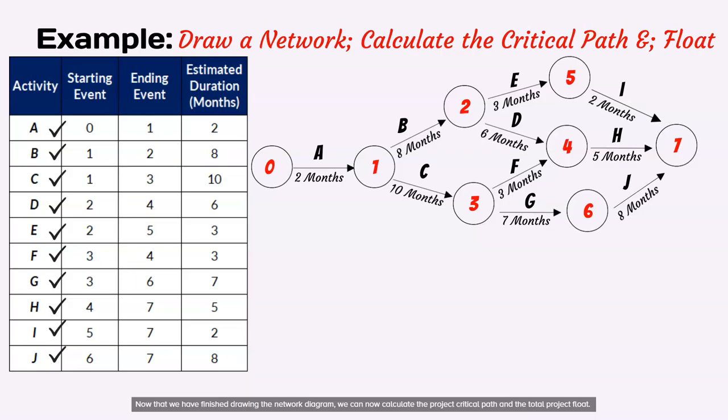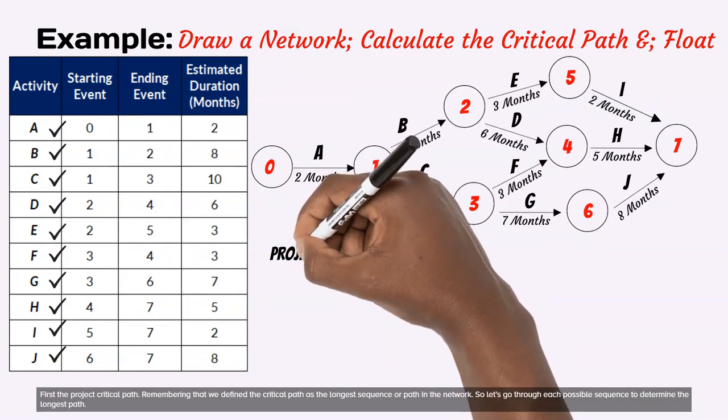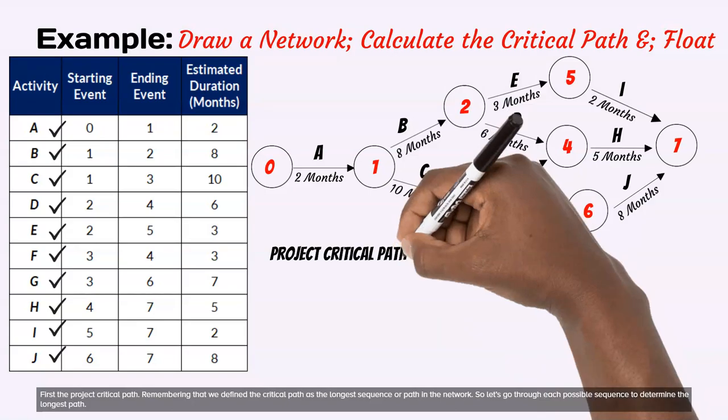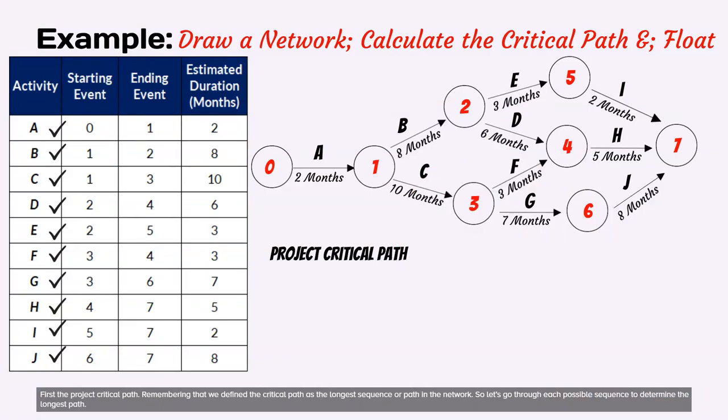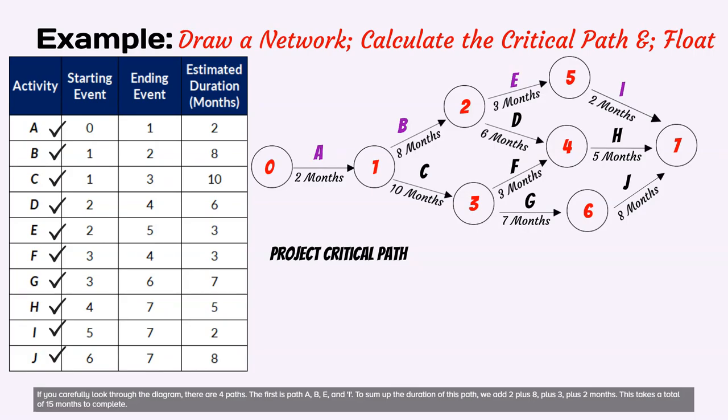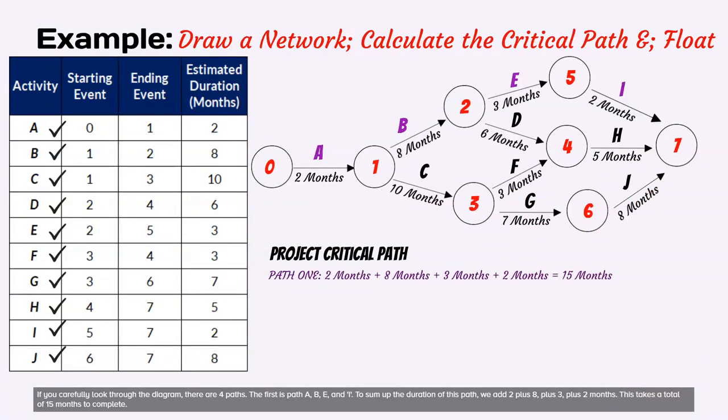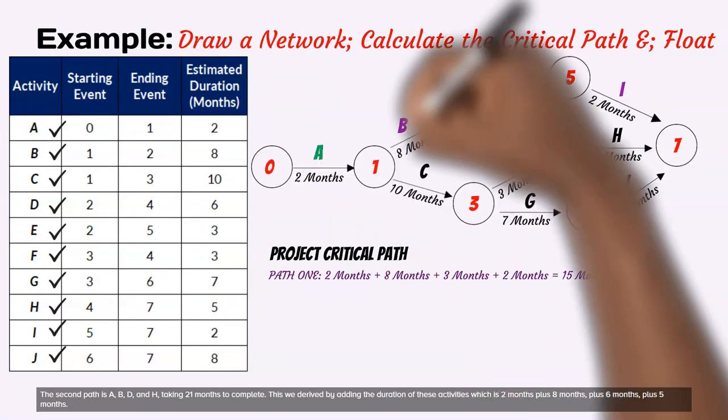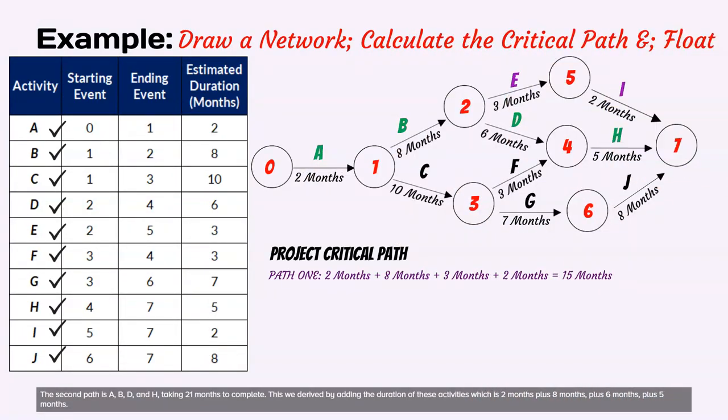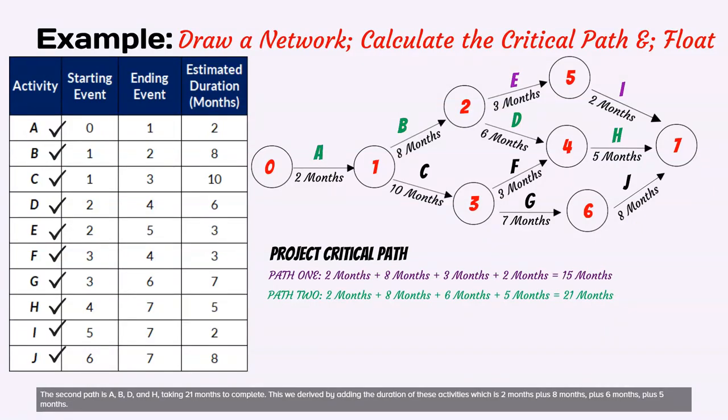First, the project critical path. Remembering that we defined the critical path as the longest sequence or path in the network. So let's go through each possible sequence to determine the longest path. If you carefully look through the diagram, there are 4 paths. The first is path A, B, E, and I. To sum up the duration of this path, we add 2 plus 8, plus 3, plus 2 months. This takes a total of 15 months to complete. The second path is A, B, D, and H, taking 21 months to complete. This we derived by adding the duration of these activities which is 2 months plus 8 months, plus 6 months, plus 5 months.